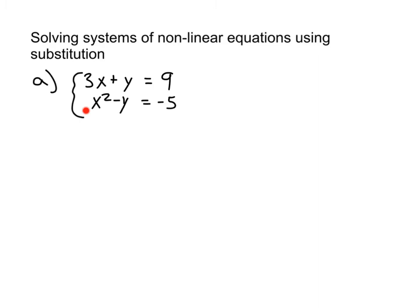If we look at this system of equations here, the first equation is linear and the second equation is not linear because of the squared term. Well, using substitution, it's going to be best that we use substitution for systems that look like this. One equation is linear, so the other equation cannot be linear.